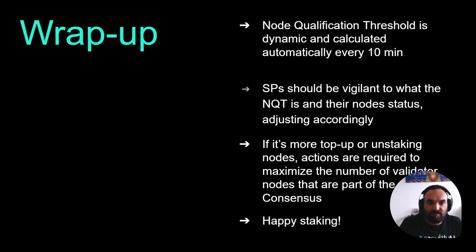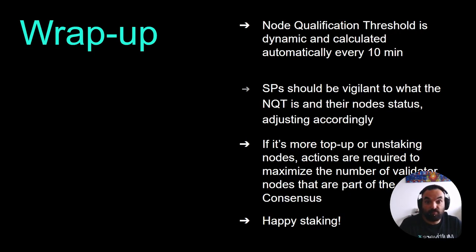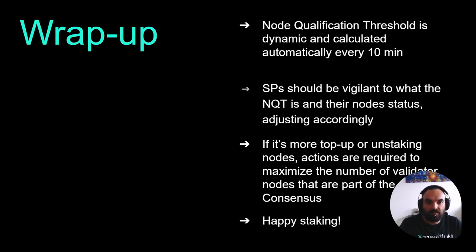That's almost a wrap-up. We have gone through explaining a few of the new concepts in staking v4. The Node Qualification Threshold (NQT) is dynamic — a number calculated automatically every 10 minutes. Staking providers should be vigilant about the NQT and their node status, and adjust accordingly — whether it's adding more top-up or unstaking nodes — to maximize the number of validator nodes participating in consensus.